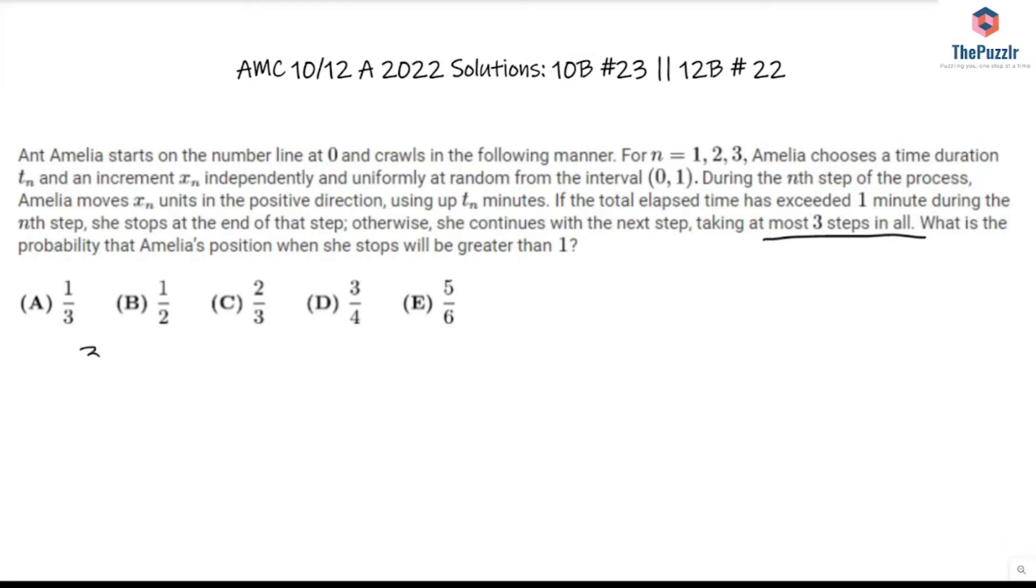So either we have three steps or two steps. Now we can't have zero steps and we also cannot have one step because she has to take at least two steps since the maximum time in one step is one minute and the total lapse time has exceeded one minute during the nth step.